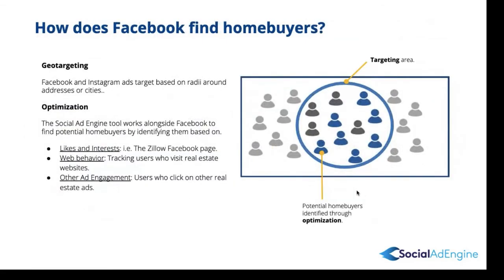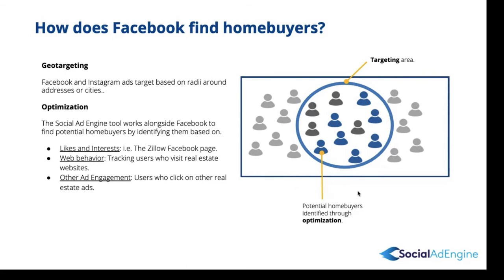You might be wondering how Facebook finds these home buyers. The biggest thing is geo-targeting combined with optimization. We target based on a radius around the addresses or cities — the default is a 25-mile radius around the listing address. Within that circle, not everyone is ready to buy a home, so our tool works alongside Facebook to find and identify potential home buyers based on their likes and interests — maybe they like the Zillow or Redfin Facebook page — their web behavior, perhaps having recently visited many real estate websites, and other ad engagement. Users who click on other real estate ads are more likely to be served your ad as well.